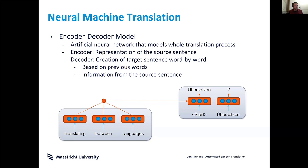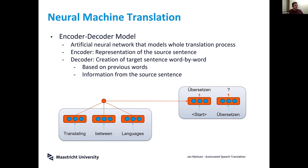Then we have the decoder on the right side, which tries to generate one target word after the other. We start by telling it to begin translating; it generates the most probable first target word. We take that word and then ask the system: given this first word, what is the most probable next word?